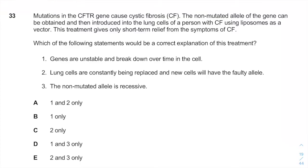Mutation in the CFTR gene causes cystic fibrosis. The non-mutated allele of the gene can be obtained and then introduced into the lung cells of a person with cystic fibrosis using some sort of vector. This treatment gives only short-term relief from the symptoms. Which of the following statements will be a correct explanation of why you only get short-term relief from the symptoms of cystic fibrosis?